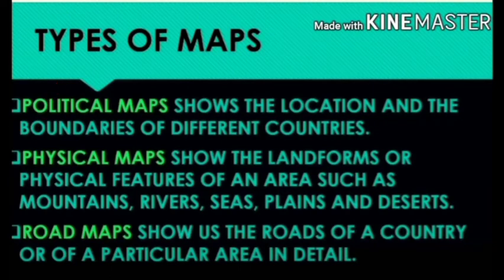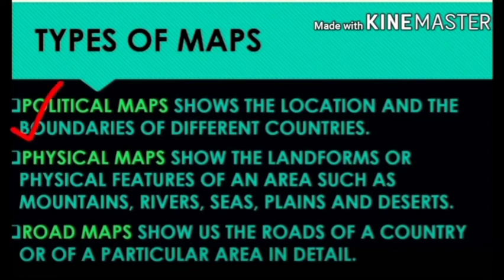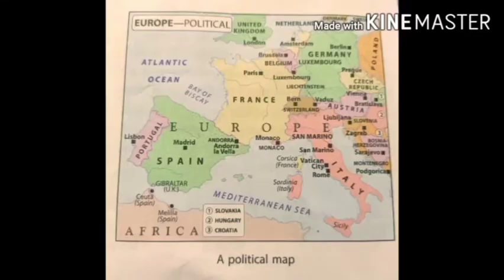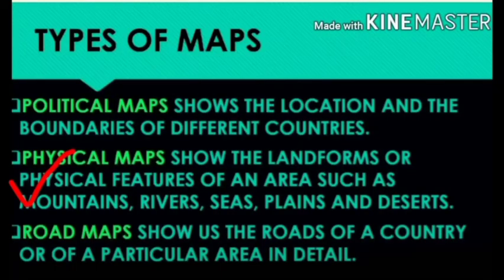The next topic is types of maps. The first one is political maps, which show the location and boundaries of different countries. This is an example of a political map of Europe, where we can see the different countries in Europe.